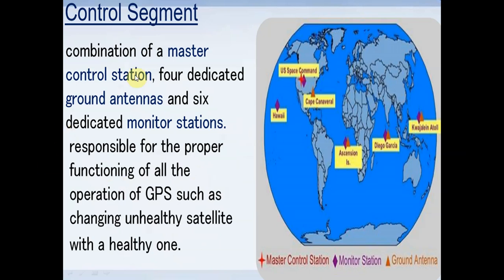For the control segment, on the other hand, we have a combination of the master control station, 4 dedicated ground antennas, and 6 dedicated monitor stations.